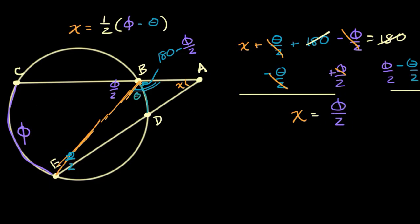So I'll get X is equal to phi over two minus theta over two. Which is the result that we wanted, phi over two minus theta over two, which is exactly this over here, if you distribute the one-half. I could factor out a one-half, and I would get exactly that, and we are done.